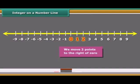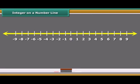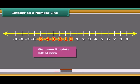Here to mark plus 2 on the number line, we move two points to the right of zero. Similarly, to represent minus 5, we move five points left of zero.